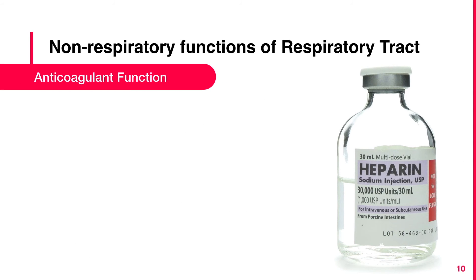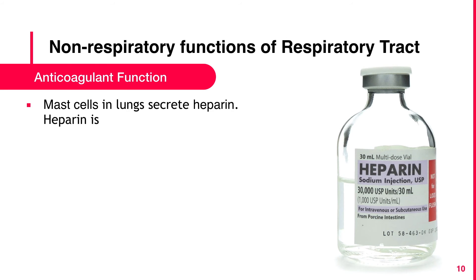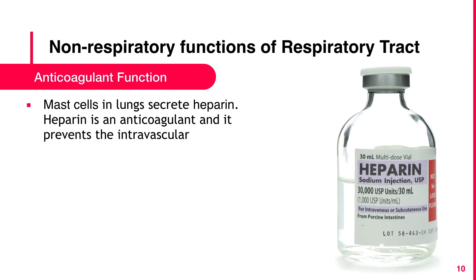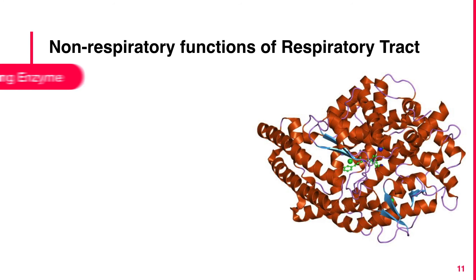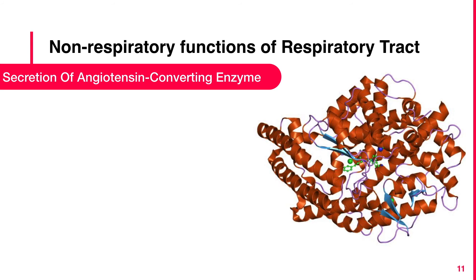Anticoagulant Function: Mast cells in the lungs secrete heparin. Heparin is an anticoagulant and it prevents intravascular clotting.